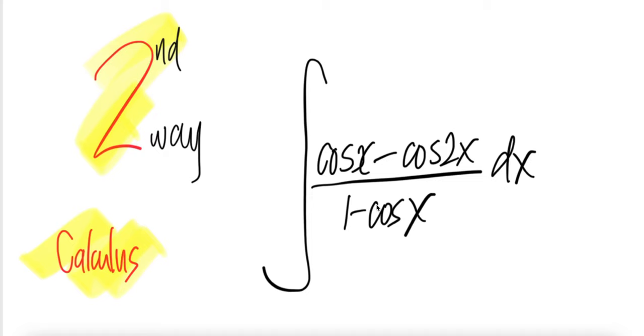Integral cos x minus cos 2x divided by 1 minus cos x. Let's look at the second way to get this.